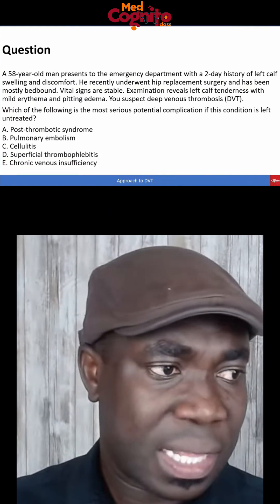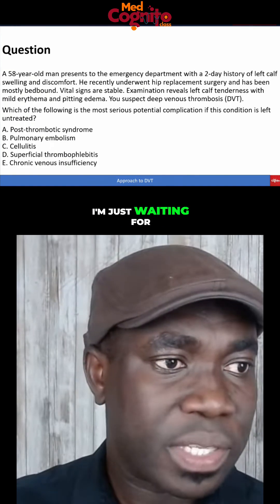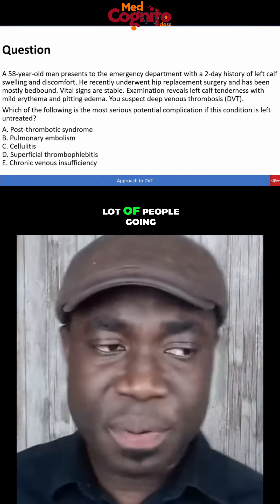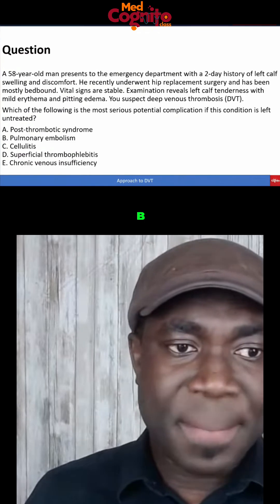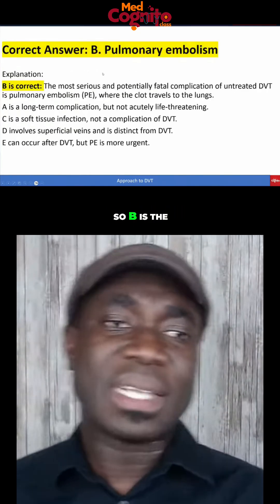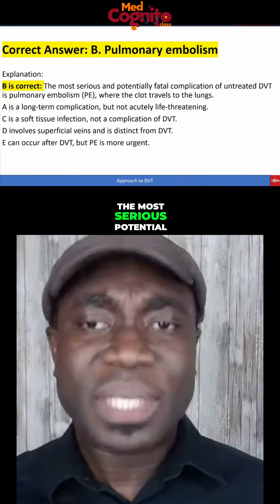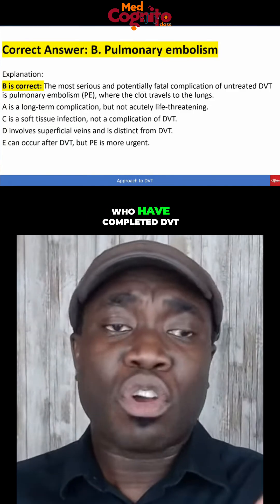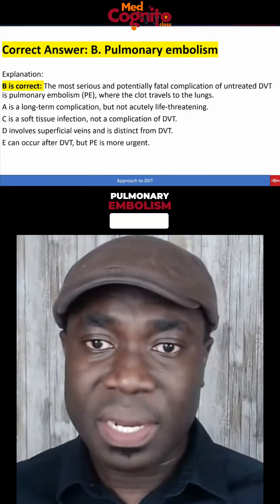Please answer the question. Let's go — I'm just waiting for your answers. I see a lot of people going for B, pulmonary embolism. And that is correct. B is the correct answer. It is a serious and potentially fatal complication of patients who have untreated DVT — pulmonary embolism.